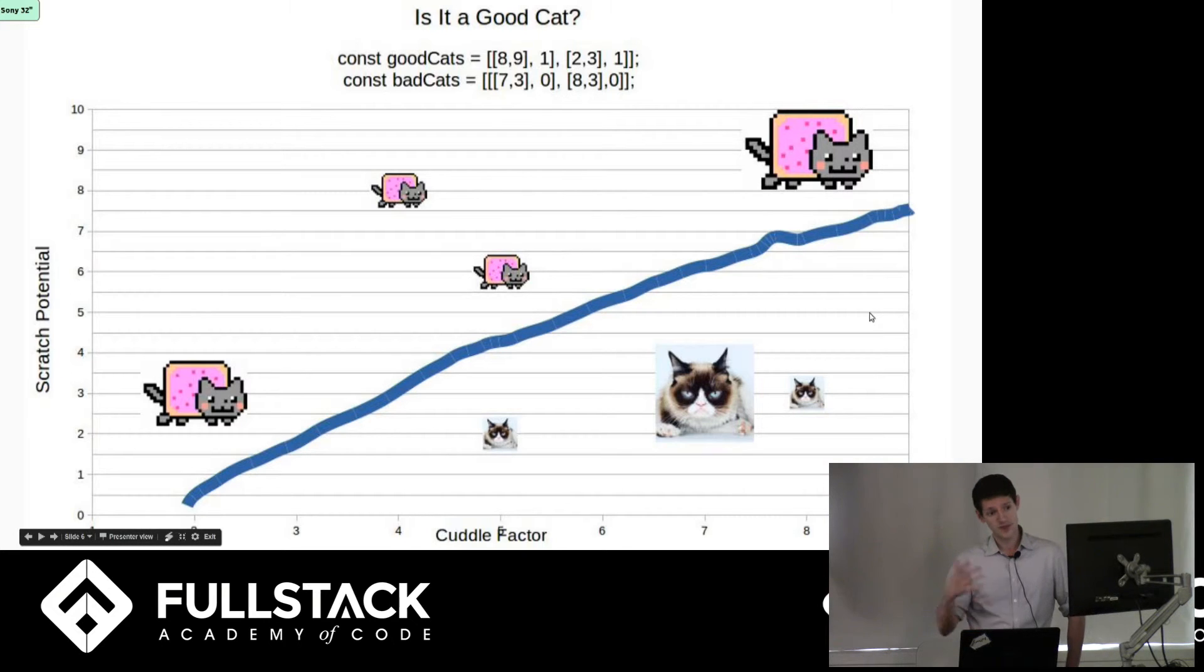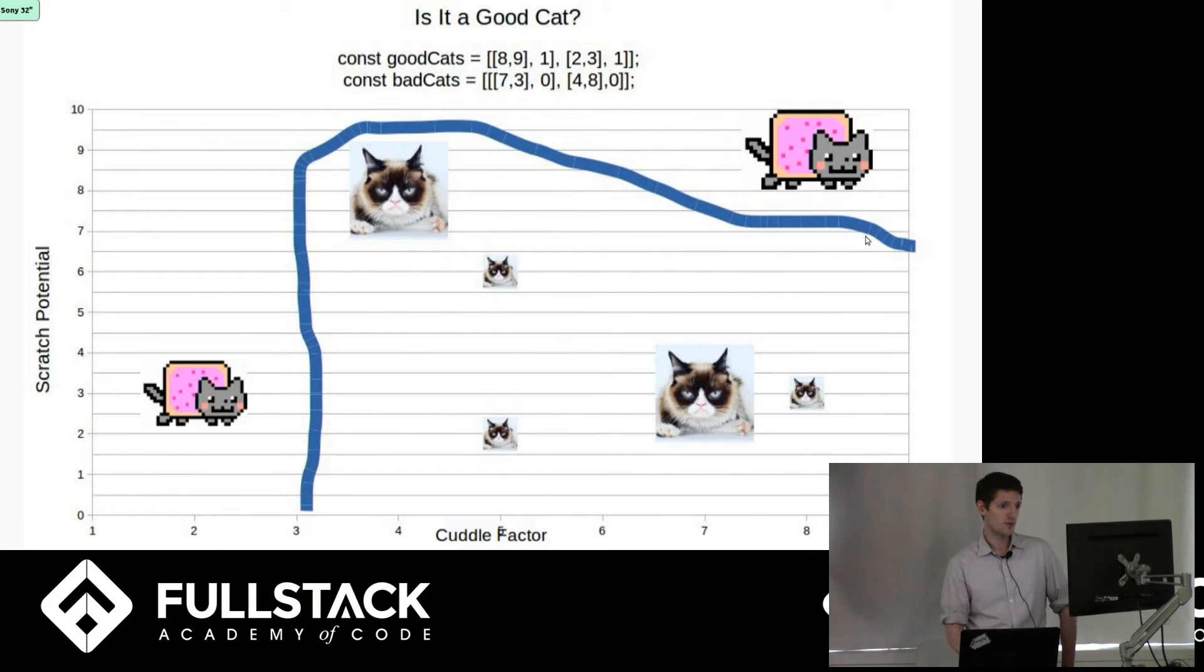So then the SVM would give you this data back, its predictions, and you as the trainer would be able to say if any of those predictions were incorrect. For example here, we can tell it, no, you were wrong, that cat was actually this cat. And feed that training data back into the SVM, at which point it would change its line and its predictions.